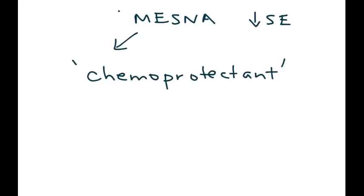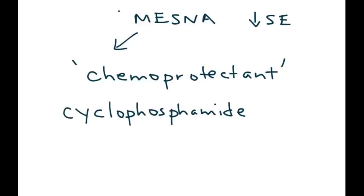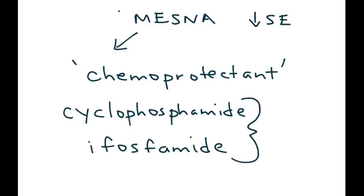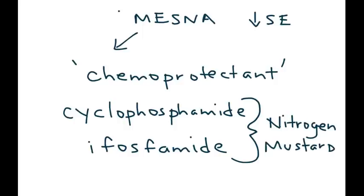There are two cancer drugs in particular that mesna is used with: cyclophosphamide and ifosfamide. These two cancer drugs are officially known as nitrogen mustards — that is the class they belong to.